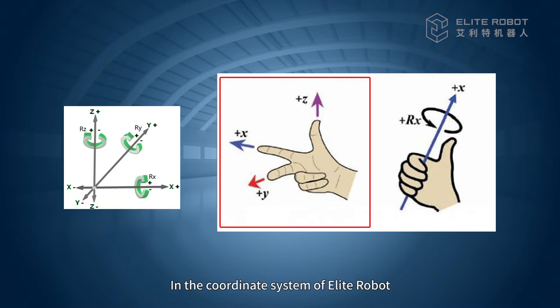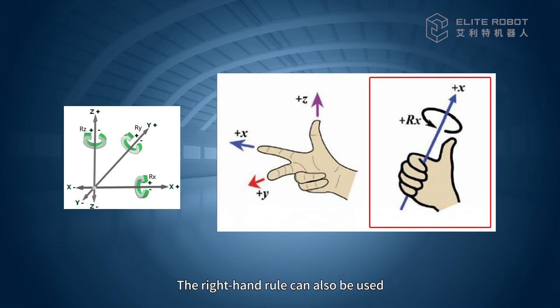The Cartesian coordinate system also conforms to the right-hand rule. In the coordinate system of Elite Robot, when you have the middle finger, index finger, and thumb stretched perpendicular to each other, the index finger represents the x-direction, the middle finger represents the y-direction, and the thumb represents the z-direction. The right-hand rule can also be used to describe the direction of the rotation axis. When the thumb is raised, the direction of the thumb indicates the positive direction, while the bending direction of the four fingers indicates the positive direction of rotation around the axis.